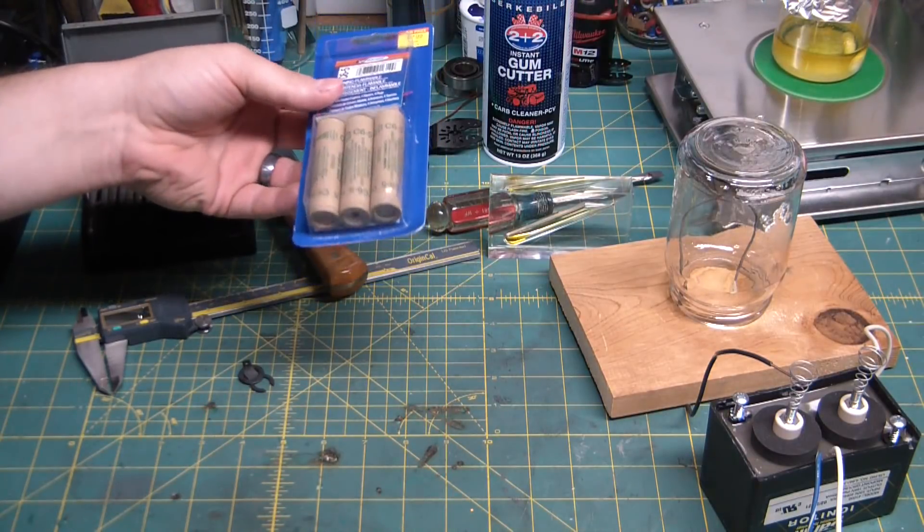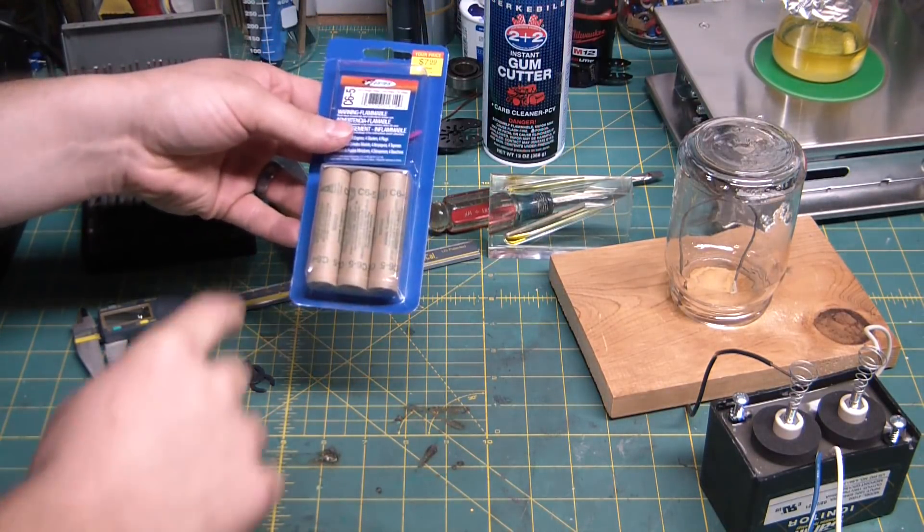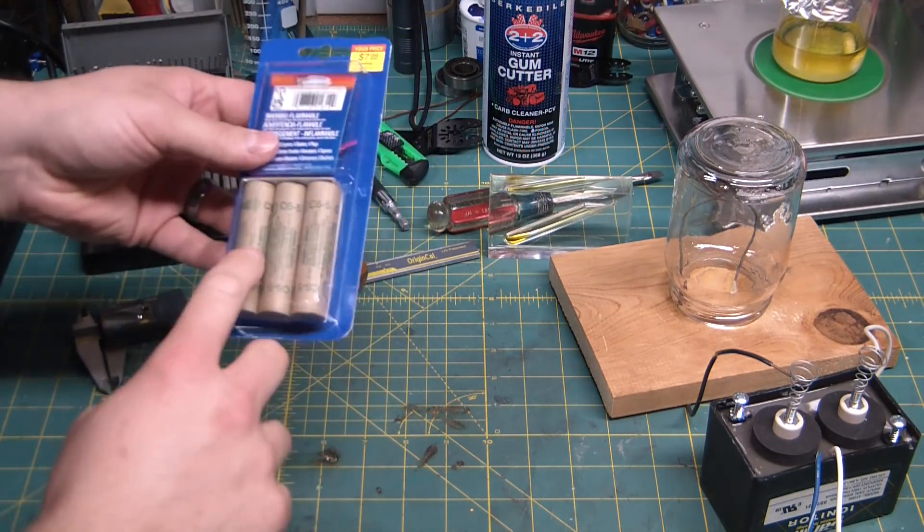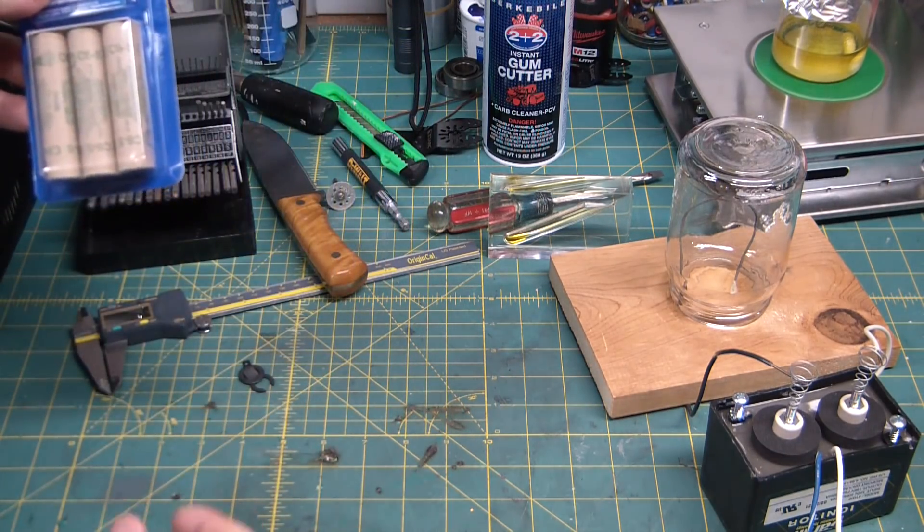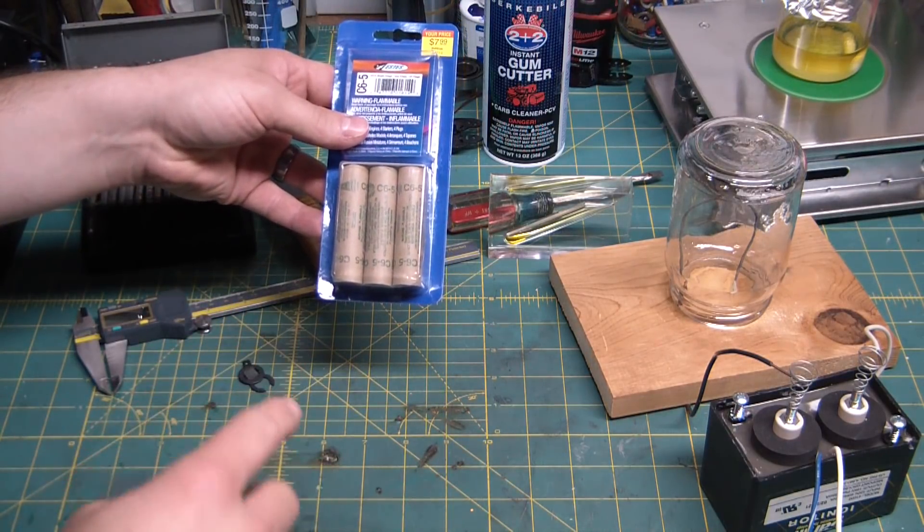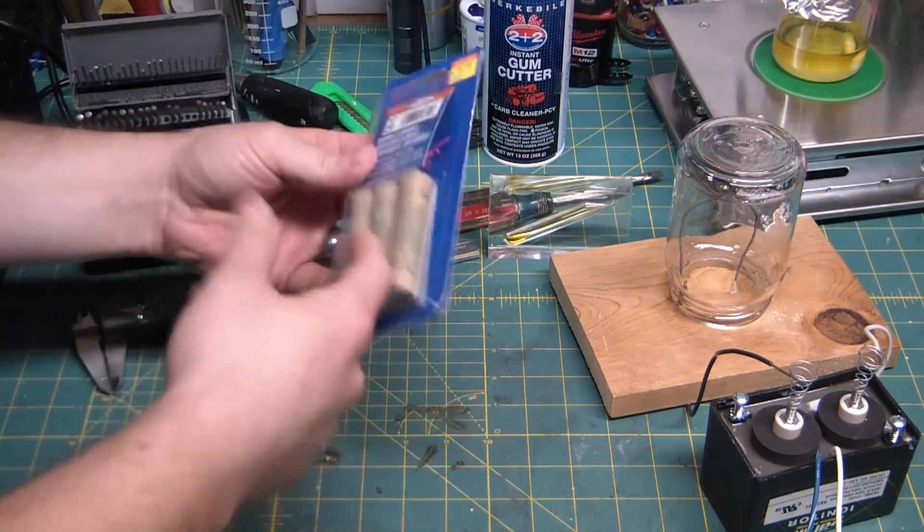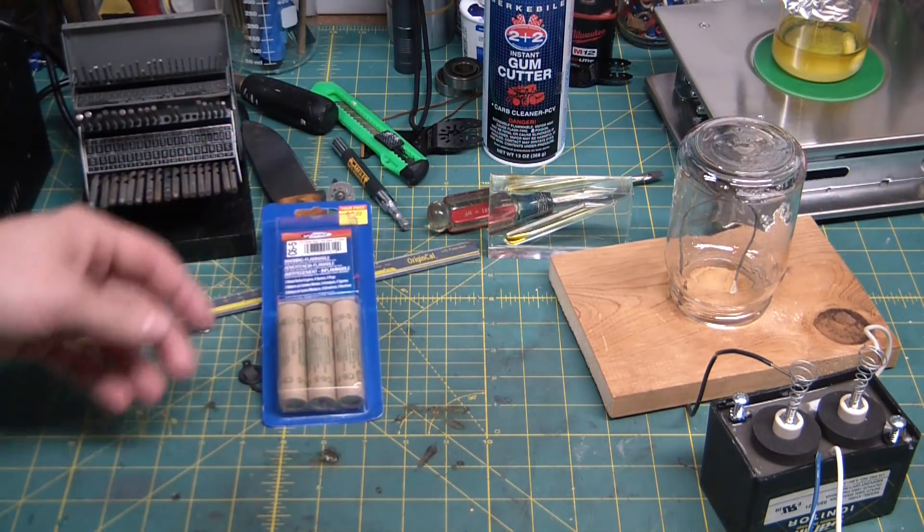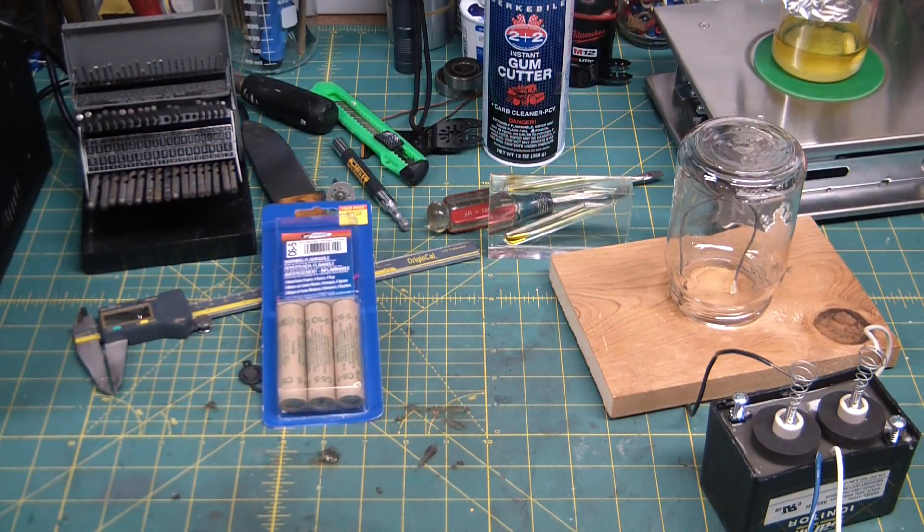That being said, I want to actually test these and see what kind of thrust curve we can get out of them. I got a pack of C's and somewhere up there I got two D's. But I think before we do that, it would be kind of cool to actually take a cross-section of one of these. So please excuse me while I go put on some safety gear.